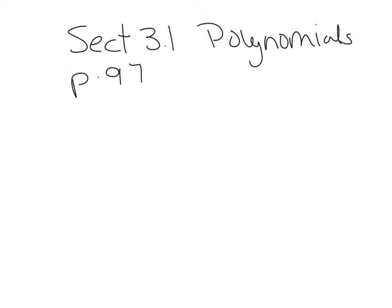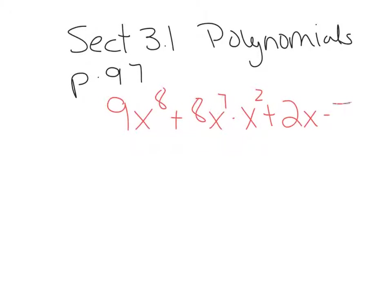This first section is basically just a review of some of the vocabulary. We're going to work with this polynomial: 9x to the 8th plus 8x to the 7th minus x squared plus 2x minus 7. The first vocabulary term is 'terms.' The terms are the pieces of the polynomial that have coefficients, variables, and exponents. The terms are separated by plus and minus signs.